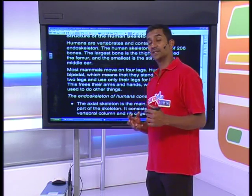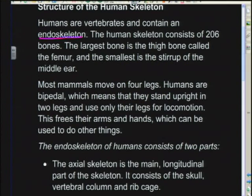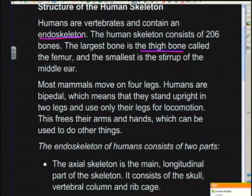Humans have an endoskeleton — a skeletal system made up of bones found internally. Human skeletons are made up of hard bones containing phosphate and calcium, which strengthens the bone. The longest bone is the thigh bone, the femur. The smallest bones are in the ear — the hammer, anvil, and stirrup (malleus, incus, stapes). These bones don't grow from the time you're born; they remain the same size and play an important role in the amplification of sound.